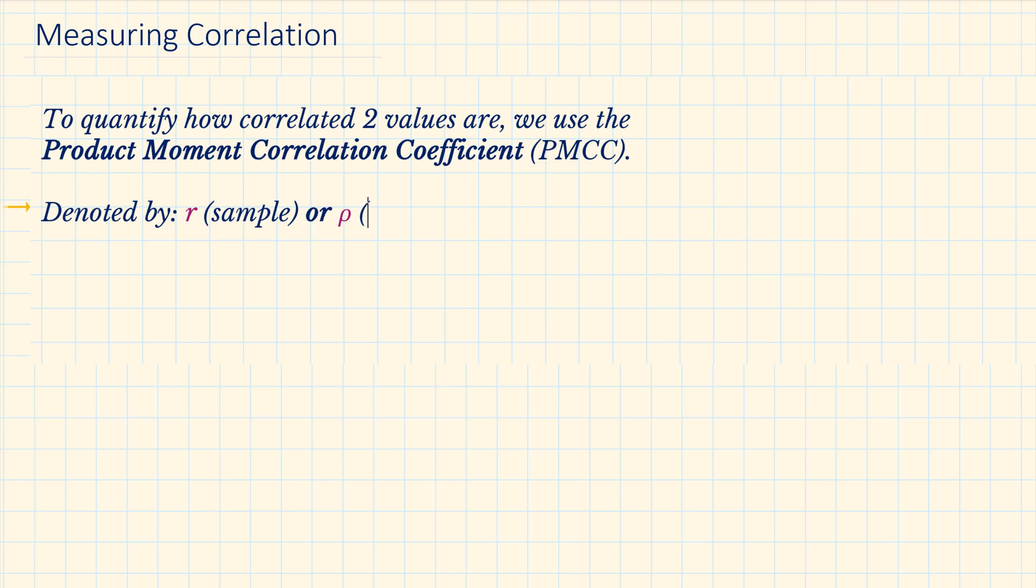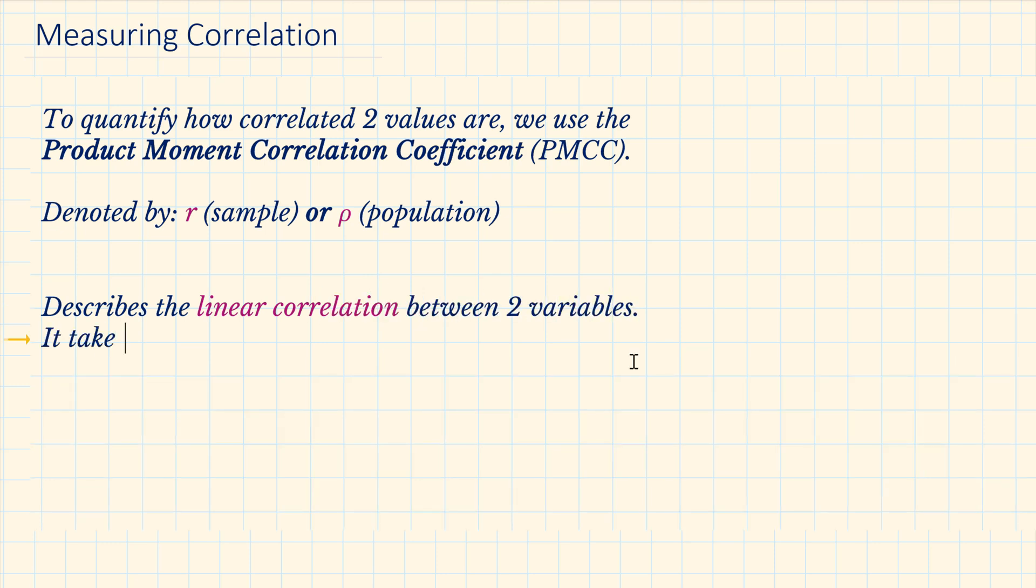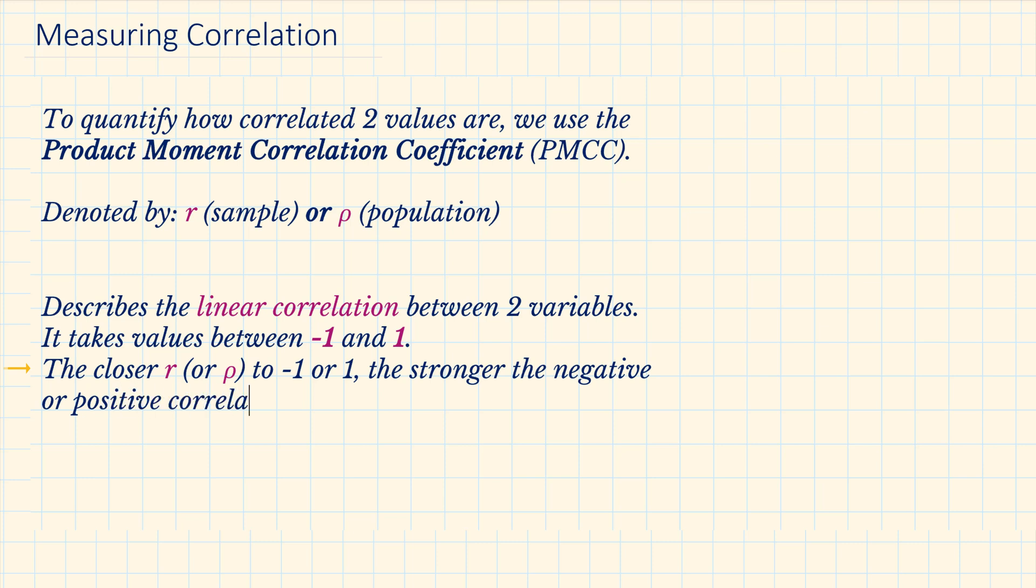However, for a population we use the Greek letter rho and it describes the linear correlation between two variables. This can take values between minus 1 and 1. The closer R is to minus 1 or 1, the stronger the negative or positive correlation.